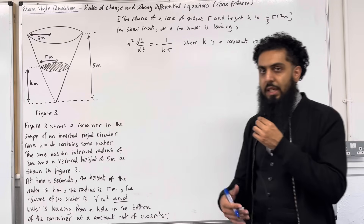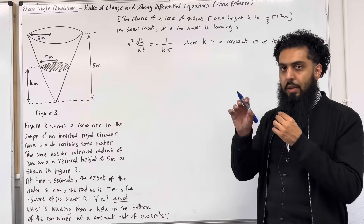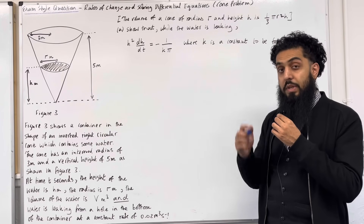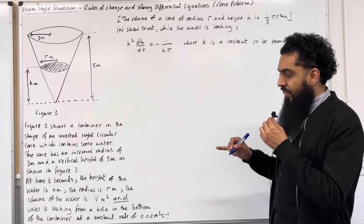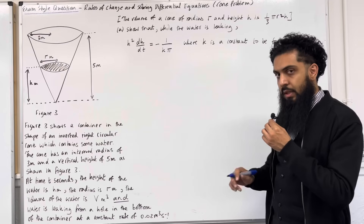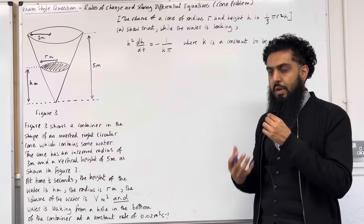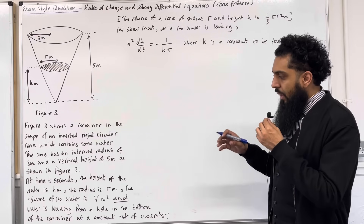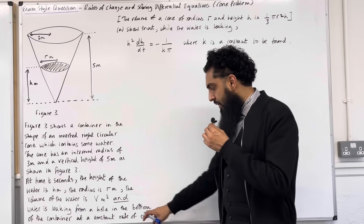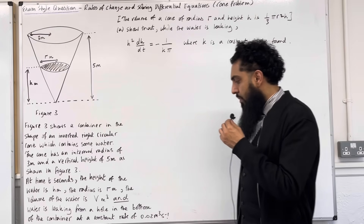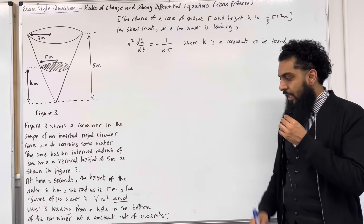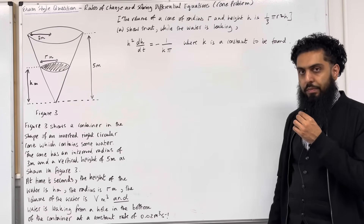We have the word 'rate', which indicates we are dealing with d-something over dt. Since we are looking at the volume of water, it will be dV over dt. Water is leaking, so we put a negative in front of our number. Therefore dV over dt is equal to minus 0.02.